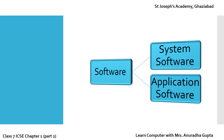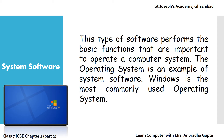Software is classified into two categories: System Software and Application Software. System Software performs the basic functions that are important to operate a computer system. Operating System is an example of System Software, and the most commonly used Operating System is Windows. Whenever we switch on our computer system, Windows gets loaded in Primary Memory first, and then we start working on it.